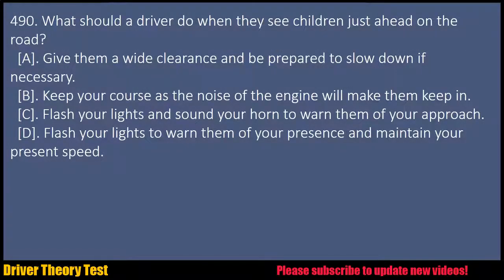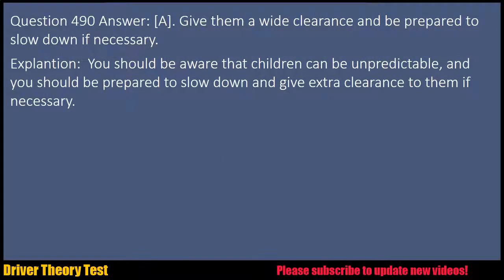Question 490: What should a driver do when they see children just ahead on the road? A. Give them a wide clearance and be prepared to slow down if necessary. B. Keep your course as the noise of the engine will make them keep in. C. Flash your lights and sound your horn to warn them of your approach. D. Flash your lights to warn them of your presence and maintain your present speed. Answer: A. Give them a wide clearance and be prepared to slow down if necessary. Explanation: You should be aware that children can be unpredictable and you should be prepared to slow down and give extra clearance to them if necessary.